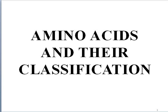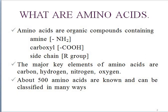Today we will learn amino acids and their classification. Amino acids are organic compounds containing an amine NH2 group, a carboxyl COOH group, and a side chain R group. The major key elements of amino acids are carbon, hydrogen, nitrogen, and oxygen.